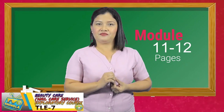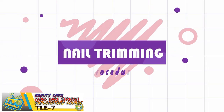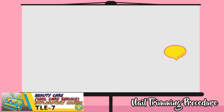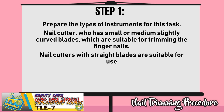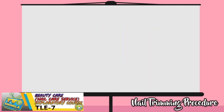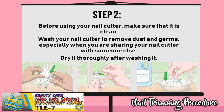For your additional activity, turn your module to page 11 and 12. There, you can see the procedure on how to trim your nails, or refer to the screen presentation. Nail trimming procedure. Step one: prepare the types of instruments for this task. Nail cutter, which has small or medium slightly curved blades, which are suitable for trimming the fingernails. Nail cutters with straight blades are suitable for use. Step two: before using your nail cutter, make sure that it is clean. Wash your nail cutter to remove dust and germs, especially when you are sharing your nail cutter with someone else. Dry it thoroughly after washing it.